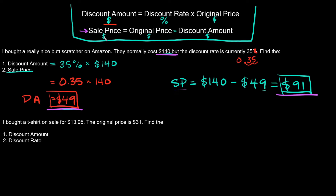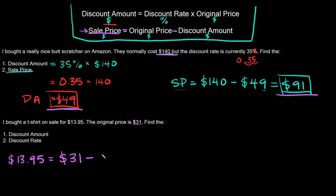So let's use the second formula instead. The sale price equals the original price minus the discount amount. We know the sale price is $13.95 and the original price is $31, so: 13.95 = 31 − a, where a is the discount amount.